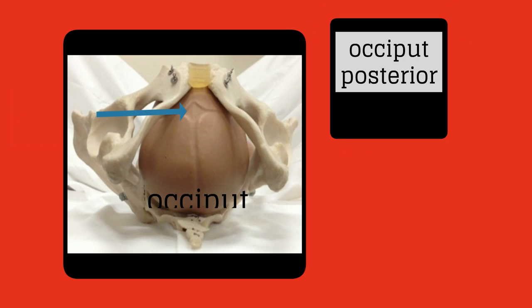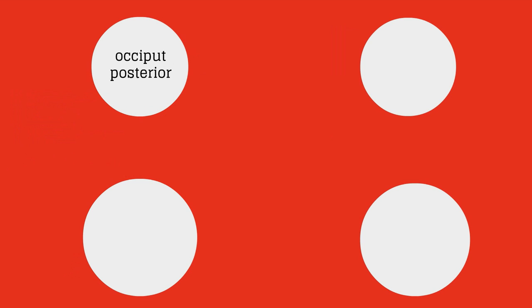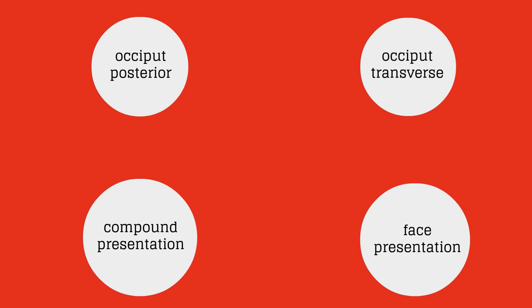This fetus is in the occiput posterior position. Note the posterior occiput and the anterior fontanelle. This fetus is in the occiput transverse position. Both the occiput posterior and occiput transverse positions have bigger diameters that need to fit through the pelvis. There are other possible presentations such as a compound presentation or face presentation which can all contribute to labor dystocia.